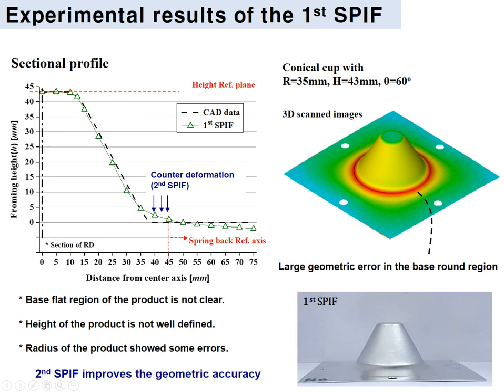The experimental result of the first incremental forming process is presented here. The target geometry was a conical curve with radius 35 mm and angle 60 degrees. The sectional profile showed differences between the experiment and the CAD data. The round region showed sectional deflection, the skirt angle was different, and the product height was not well defined due to skirt springback. Through the second incremental forming process, the geometric accuracy will be improved.